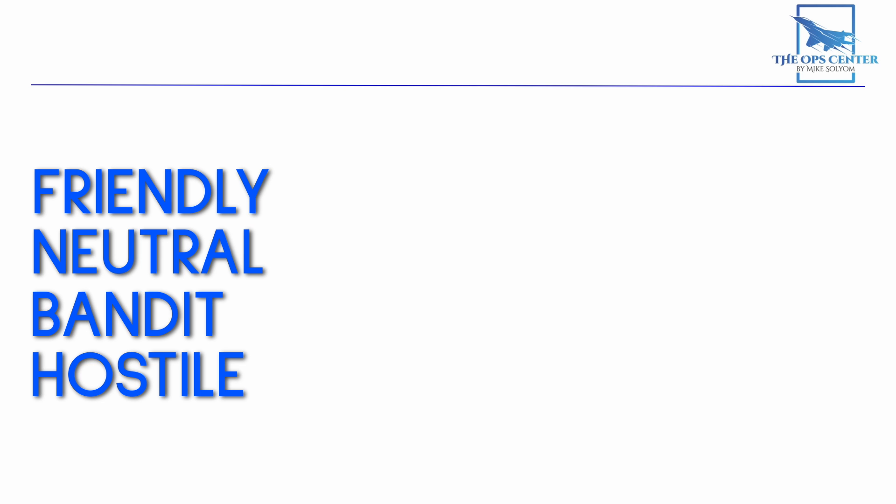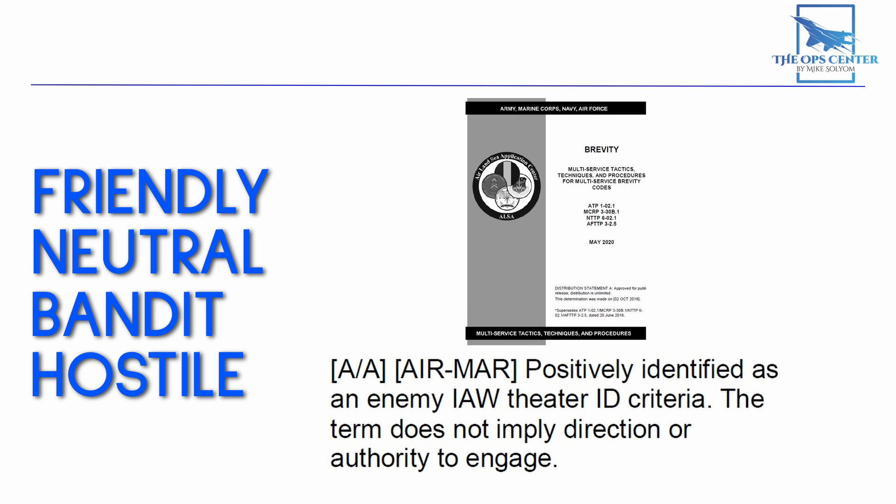Once a contact has been PID'd as an enemy, it will be called a bandit, which is defined like this: Positively identified as an enemy in accordance with theater ID criteria. The term does not imply direction or authority to engage. As you can see, this is an enemy, but without authority being granted to shoot at it.